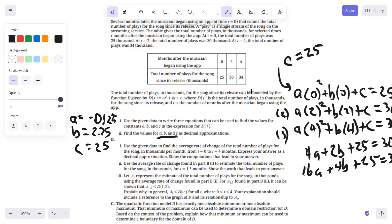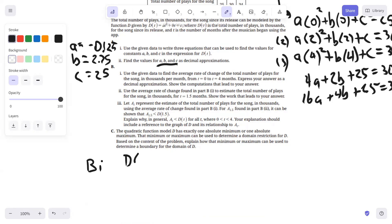Part B, use the data to find the average rate of change of the total number of plays for the song in thousands per month from 0 to 4 months. We would have D of 4 minus D of 0 all over 4 minus 0, which from the table values would be 34 minus 25 over 4, or 9 fourths, which is 2.25 thousand songs per month.